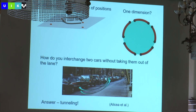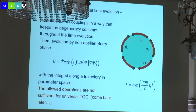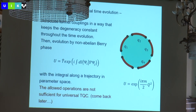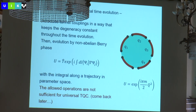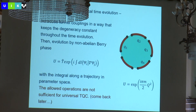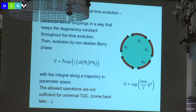Unitary transformations are carried out by tunnel-coupling interface points together. There is a protocol for that. The crucial point is to keep the degeneracy of the ground state fixed throughout the process. If you change the degeneracy, you lose topological protection.